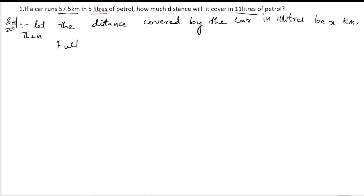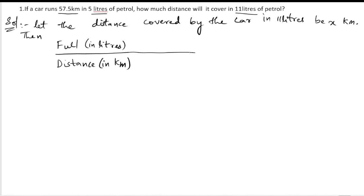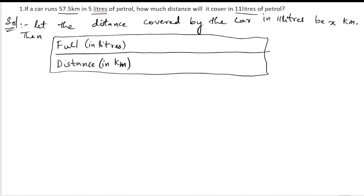We have two things: fuel in liters and distance in kilometers. Let us draw a table for this. They have given 5 liters and 11 liters of petrol. In 5 liters, 57.5 kilometers is traveled, but we don't know the distance in 11 liters — for that we are taking it as x.